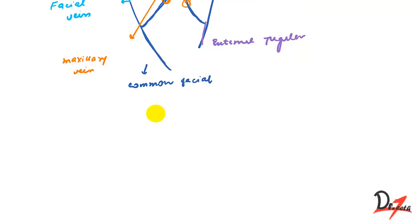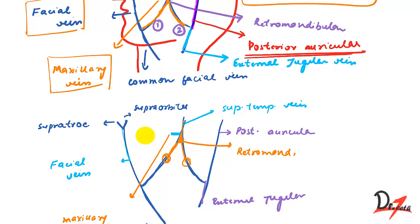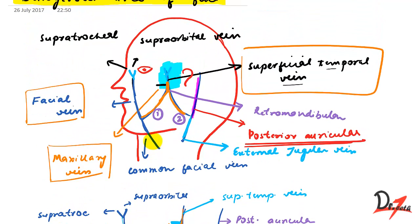Now coming back to the dangerous area of the face. The dangerous area of the face is the area drained by the facial vein — this area right here. Let us see this in a different diagram.